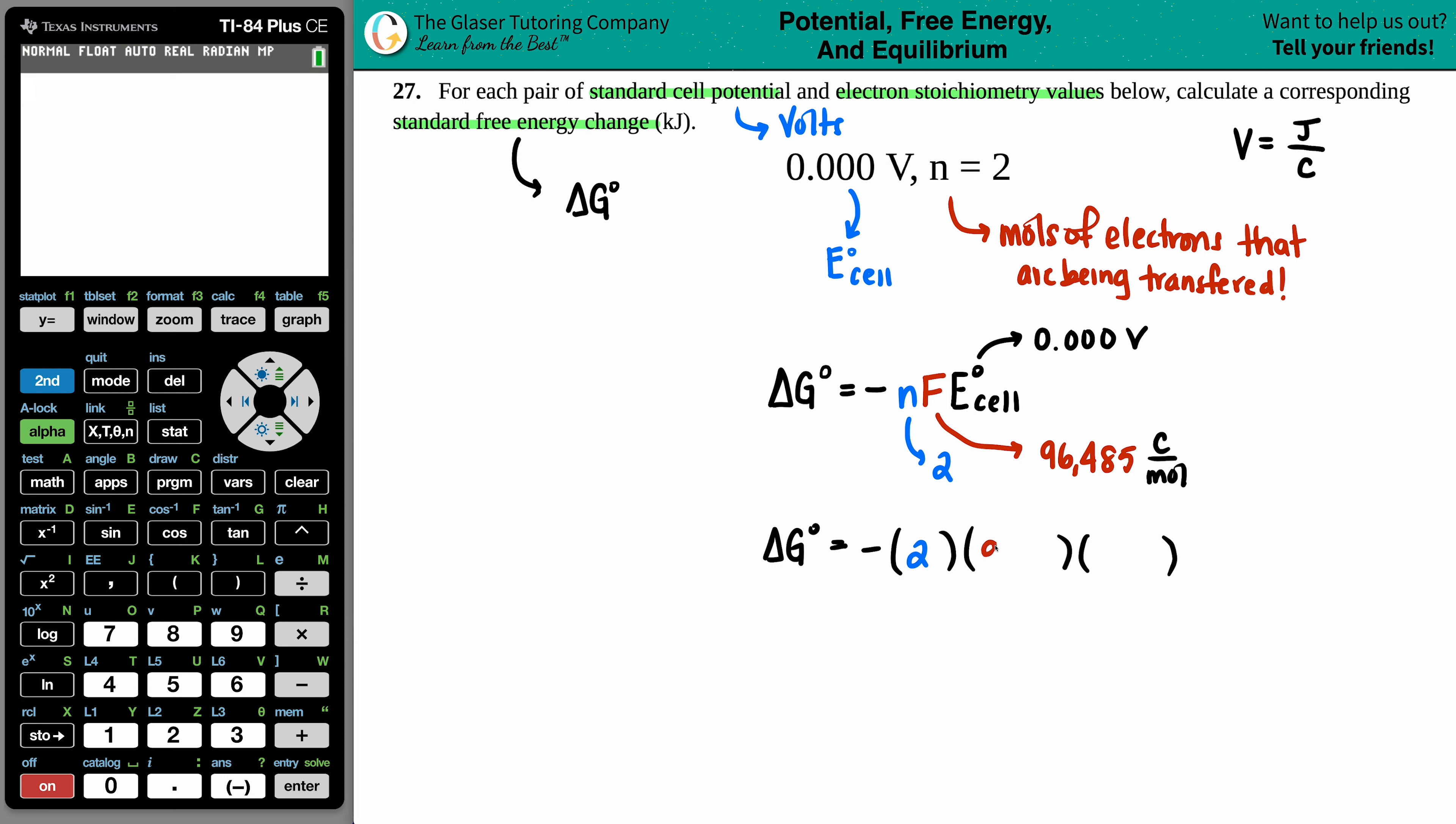96,500. Now I say 96,500 if you wanted to round it, but let's just be more specific. 96,485. And then the E cell value is going to be zero.